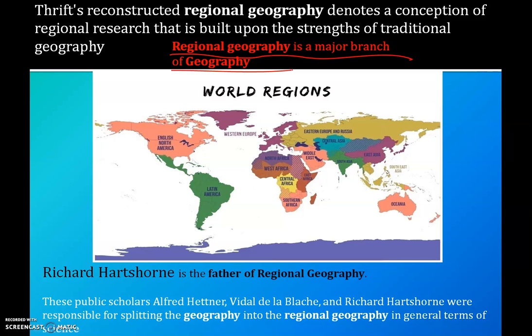A region is defined as a part of the earth's surface with one or many similar characteristics that make it unique from other areas. Regional geography also studies the specific boundaries between places — the study of a particular region with reference to all geographical factors, but in a particular area like Punjab or Maharashtra, including soil, weather, rainfall, and climate.